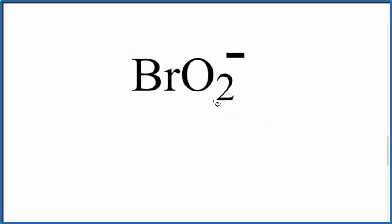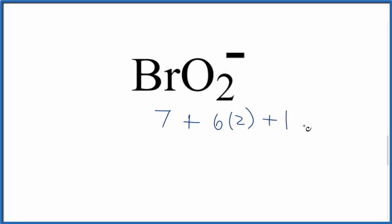In this video, we'll write the Lewis structure for BrO2-, the bromite ion. Let's count the valence electrons up. For bromine, that's in group 17, so we have 7. Oxygen is in group 16, so we have 6 times the 2 oxygens. And then for the negative sign, we add an additional valence electron. That gives us 20 total valence electrons for the BrO2- Lewis structure.